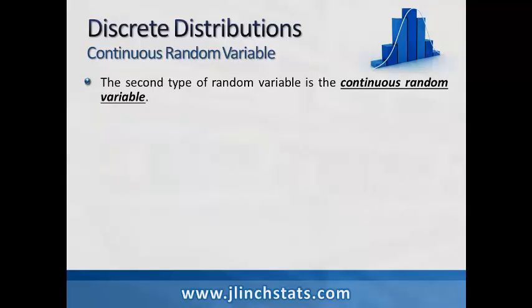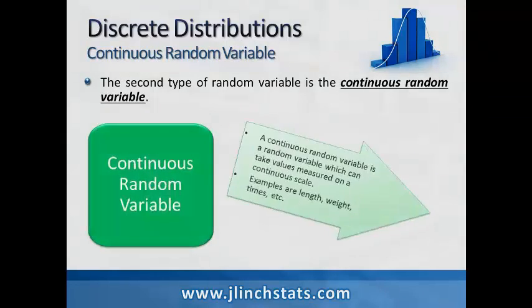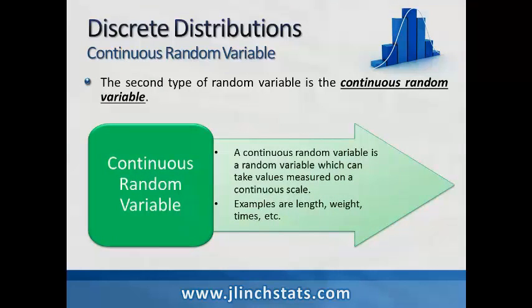On the other hand, continuous random variables can take on any range of values. A continuous random variable is a random variable which can take values measured on a continuous scale. For example, lengths, weights, times, etc. are all possible random variables that can take on any values within their particular domains. Because these random variables can take on measures on a continuous scale, we call them continuous.